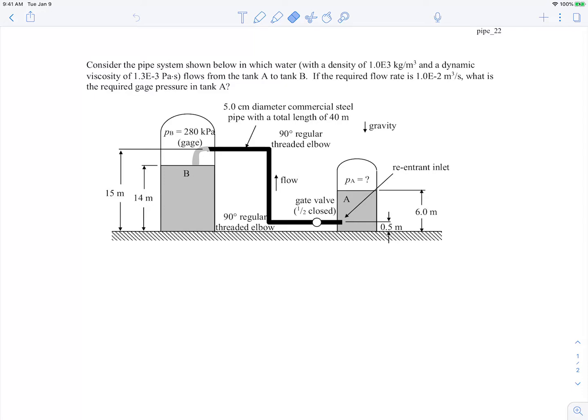In this problem, we're told we have some water in a certain tank here, this tank A, and we have some unknown pressure here that's causing the flow to go through this pipe. There's a gate valve here, flow's going up, changing elevation, and then discharging into tank B.